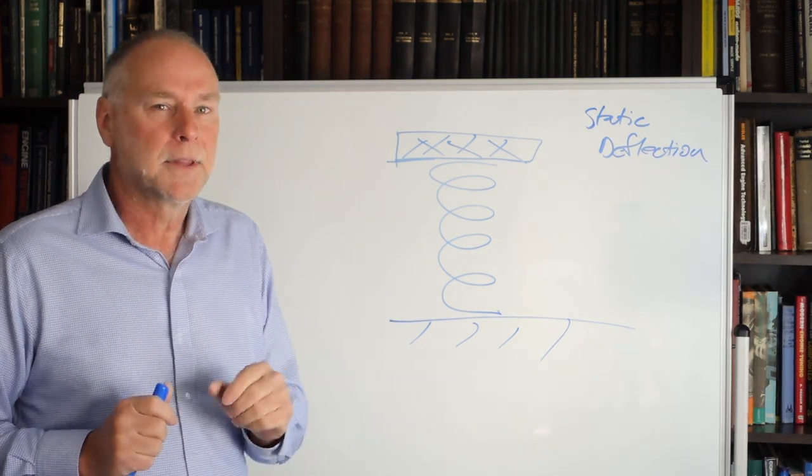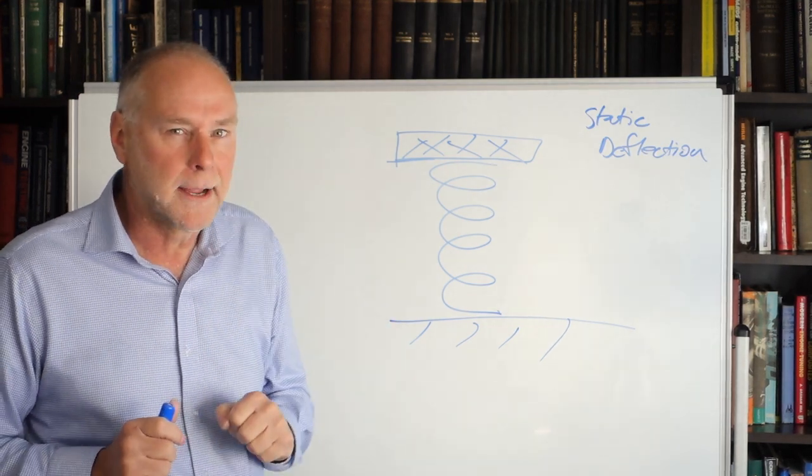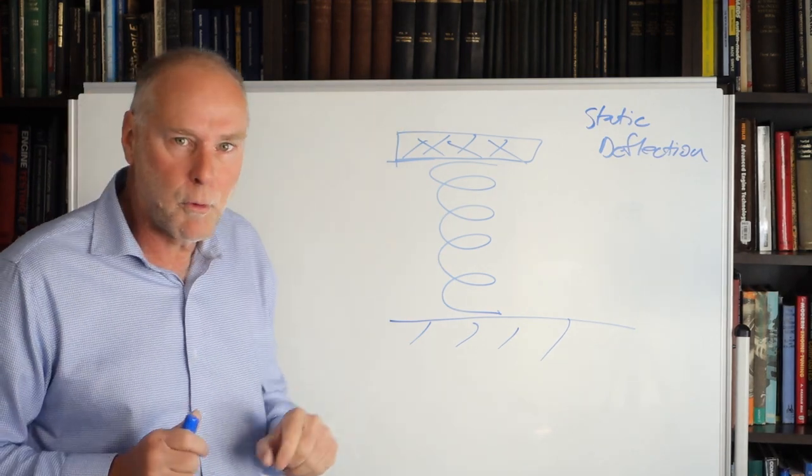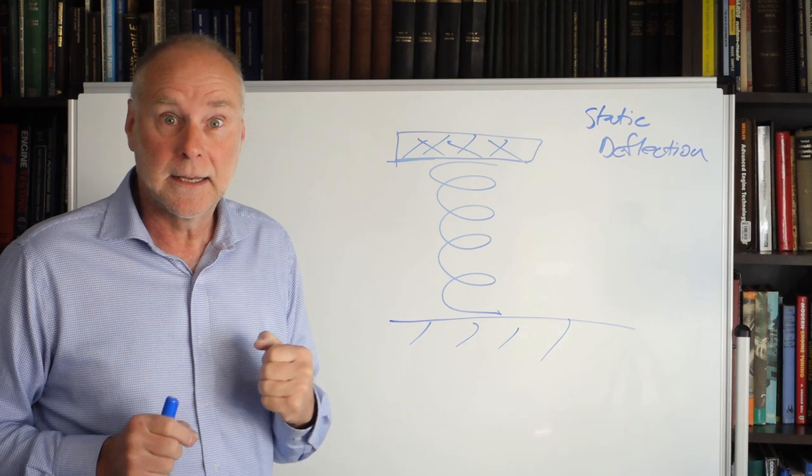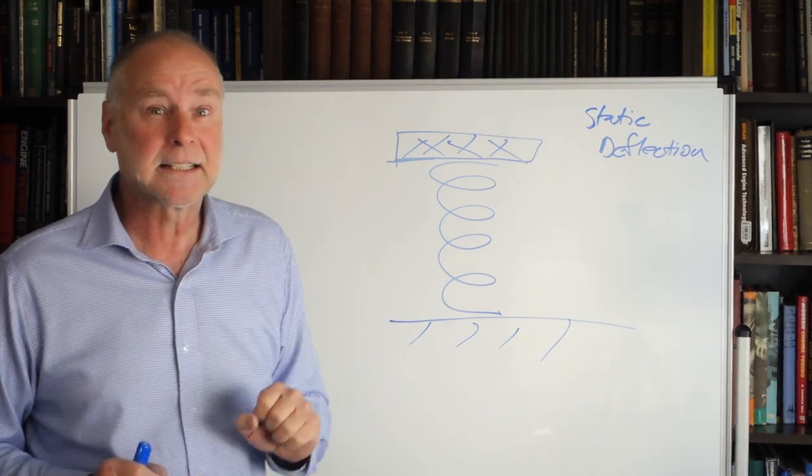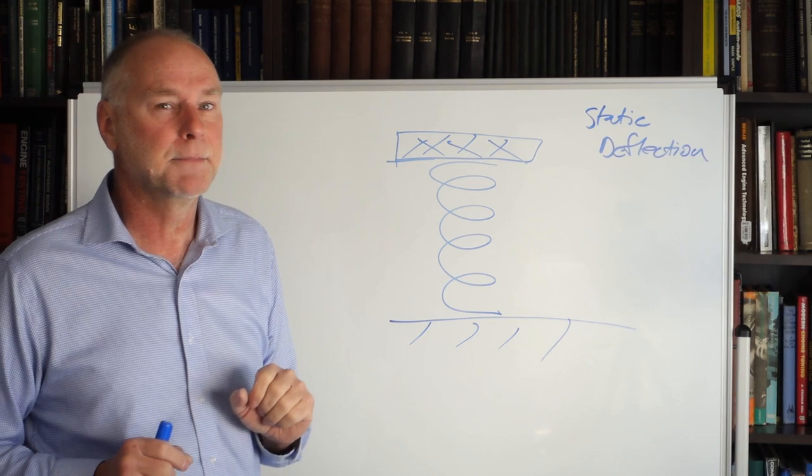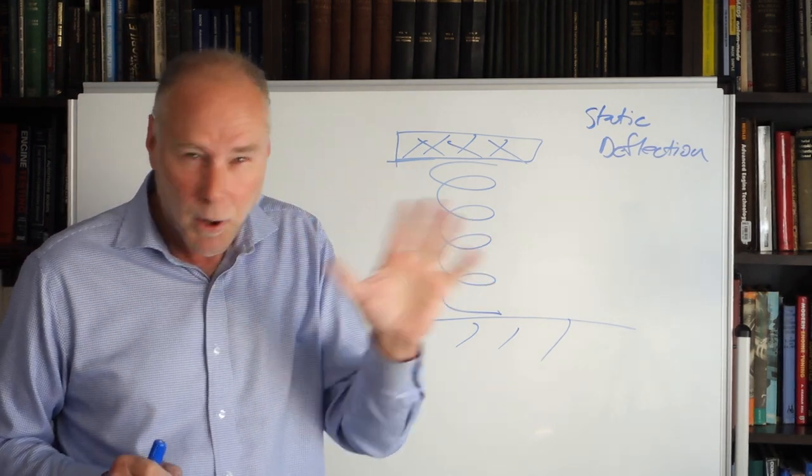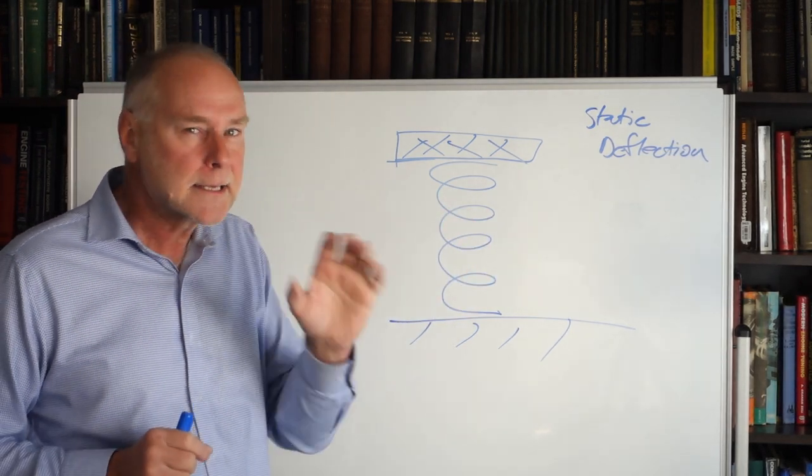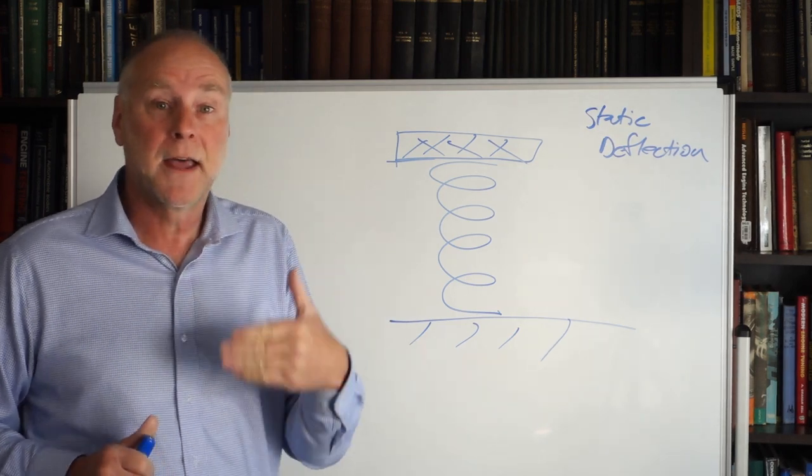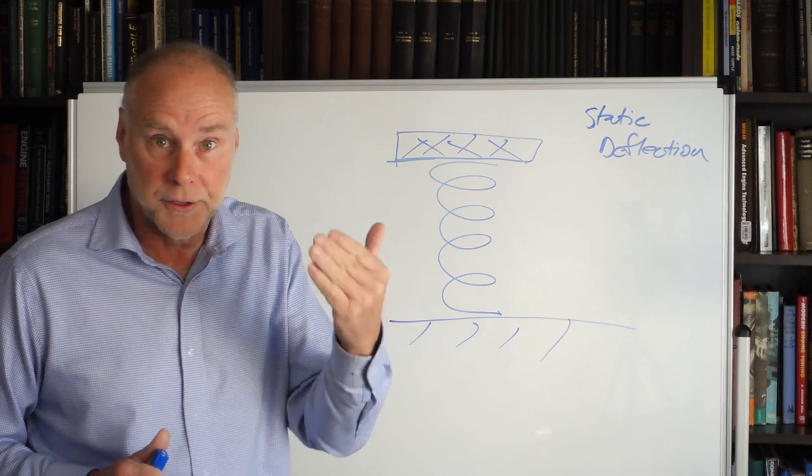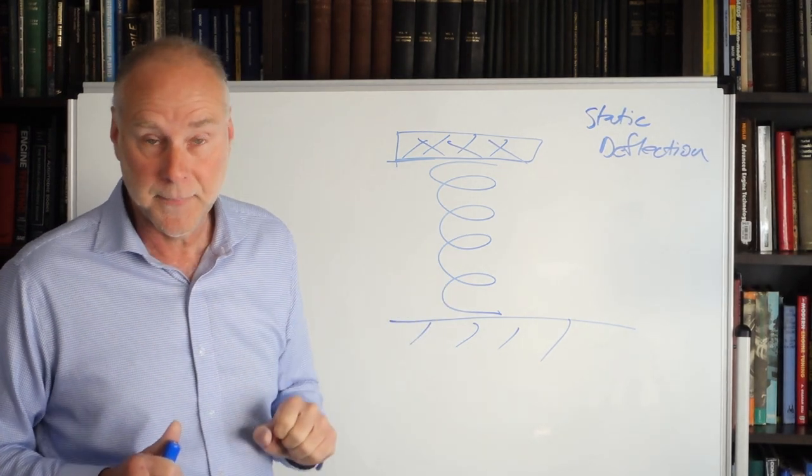Now let's do it again, but this time let's have a stopwatch in our hand. So we push down on the weight, we release it, and then we time how many bounces it does over the next minute. Let's say it does 60 bounces in that next minute. It's dying away. Don't worry about that. Just count the bounces. 60 bounces in a minute is one per second, and we would give that what's called a frequency of one hertz, one bounce per second.